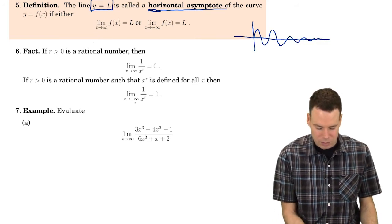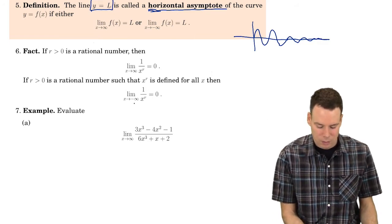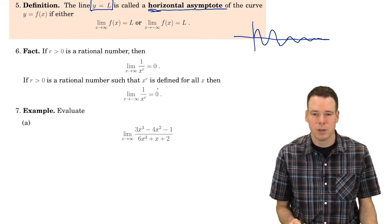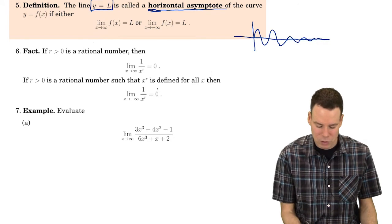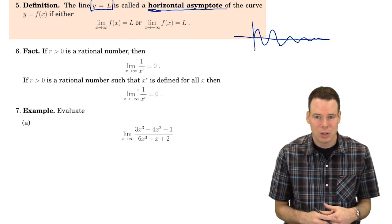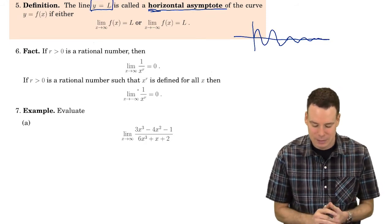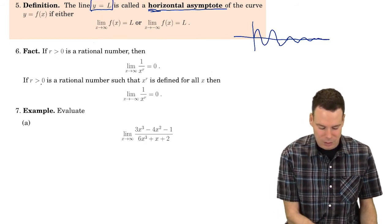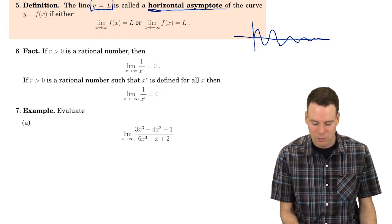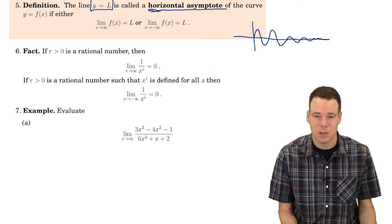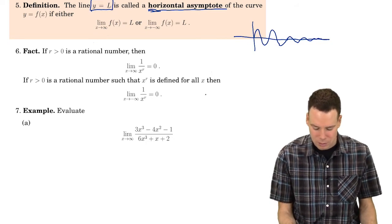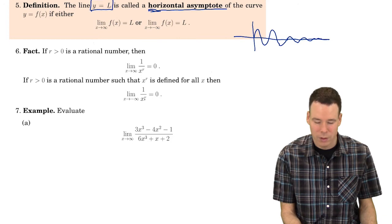So what about the limit as you go to negative infinity? Well, the limit as x goes to negative infinity of 1 over x to the r is also 0, but we do have to be careful there. We have to make sure that the r is a number for which x to the r makes sense. So we're saying here that r is a rational number such that x to the r is defined for all x, in particular for negative values of x, then the limit is 0. So this excludes cases like 1 over x to the 1 half.